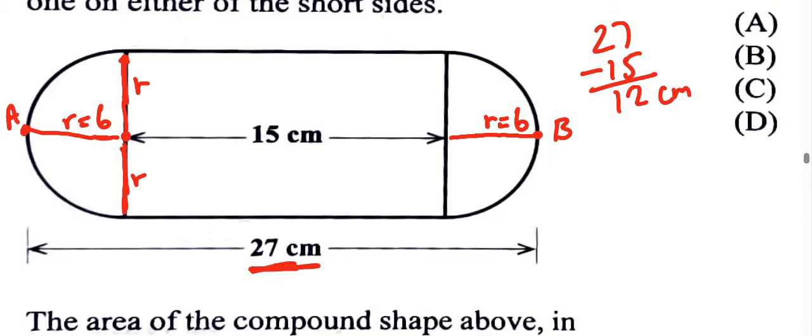If R is 6, then this is 6 and this is 6, which means that the width of the rectangle, while the length is 27, the width of the rectangle is a combination of the two radii, the diameter there of 6 plus 6, which is going to be 12. So this is 12 by 15. To find out the area, we multiply those, and 12 times 15 is 180.